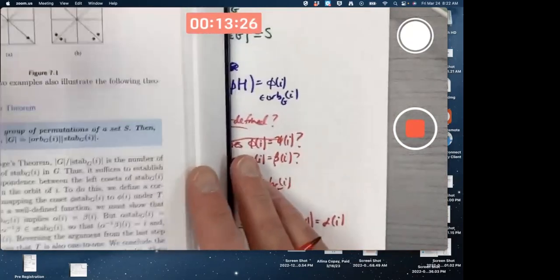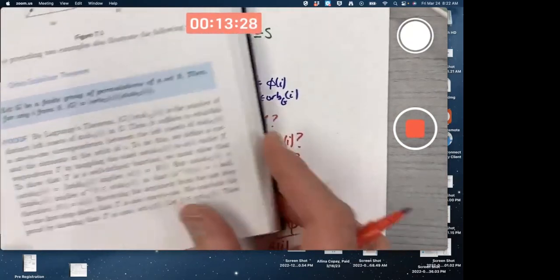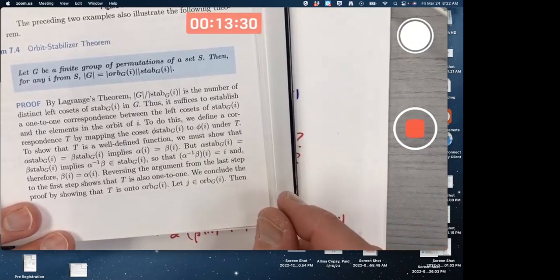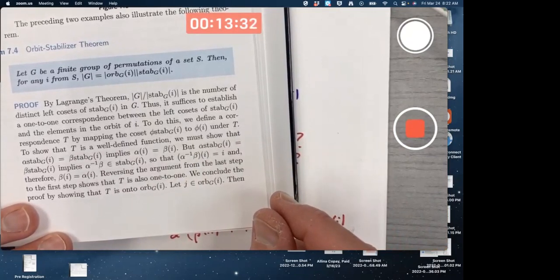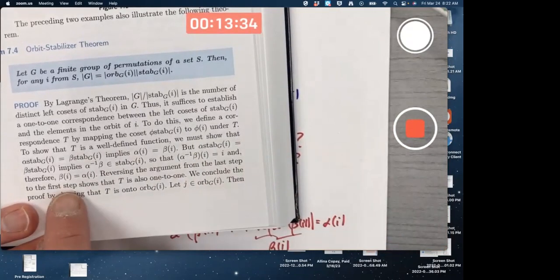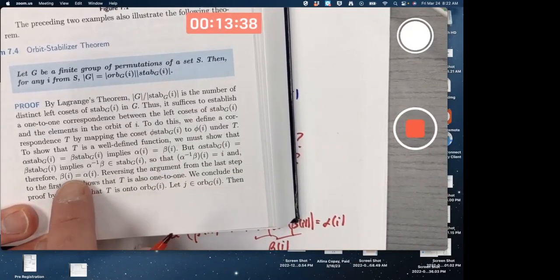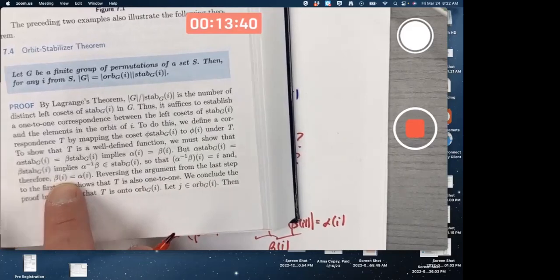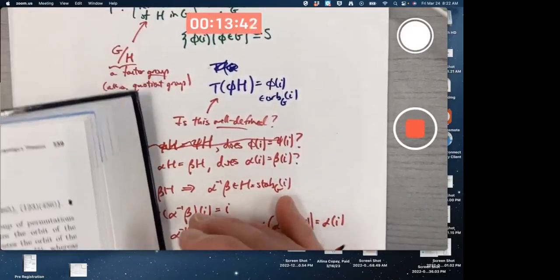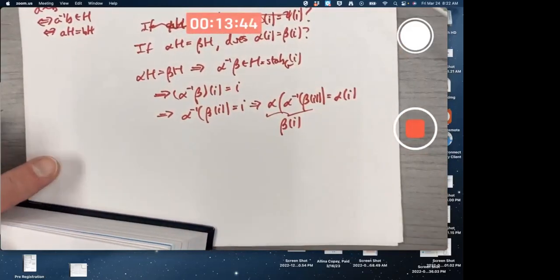Then you want to show T is one-to-one. It's actually a reverse of the argument that it's well-defined. Reversing the argument shows it's one-to-one. Suppose, let's go ahead and write it out here. Suppose